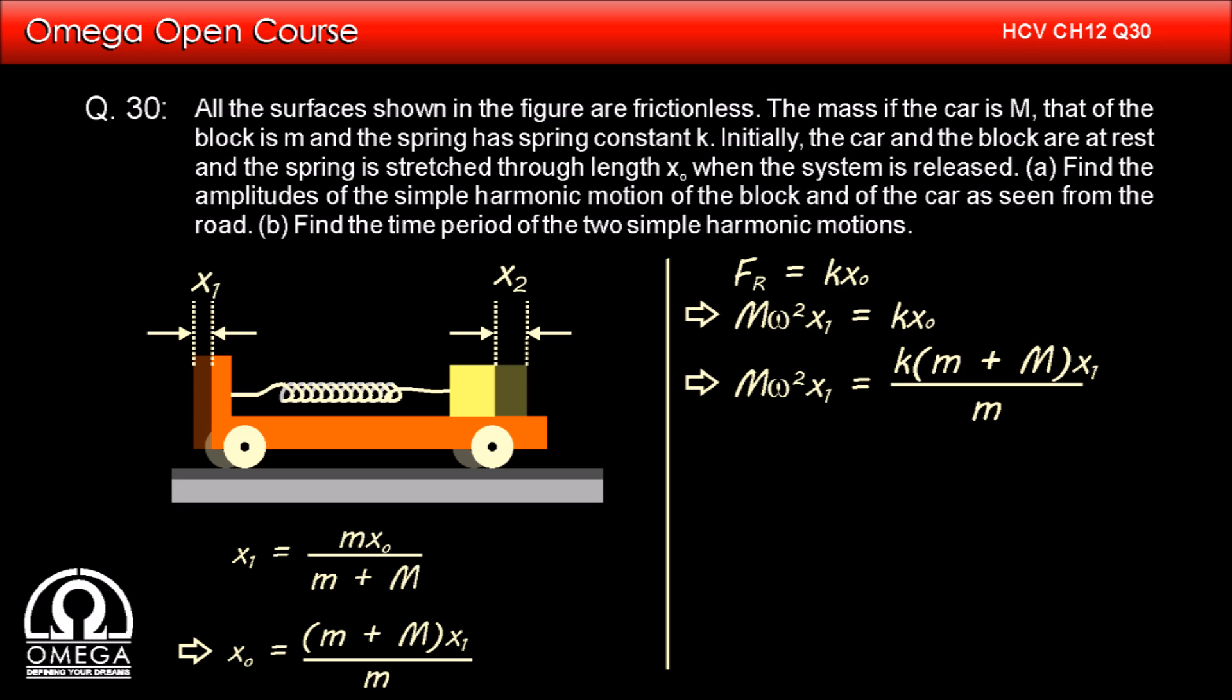Putting the value of X1 in the expression, we get capital M omega square X1 is equal to K into small m plus capital M into X1 by small m, which implies omega is equal to square root of K into small m plus capital M by small m into capital M.